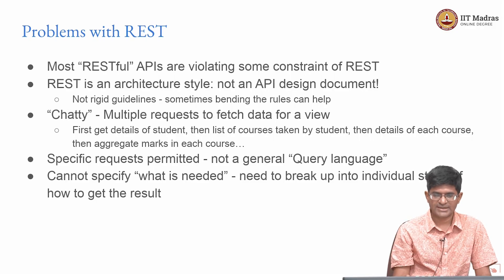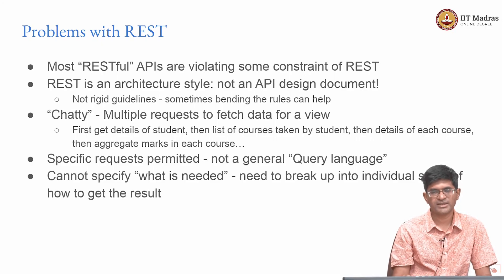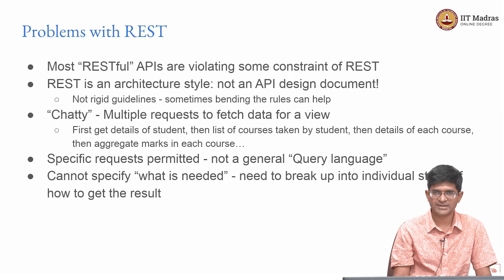One of the problems with REST is that it is sometimes called a chatty protocol — a lot of back-and-forth requests are required to get the data corresponding to a single view. For example, if you want the top students in a course, you get student details, then the list of courses taken by the student, then details of each course, then aggregate marks — potentially many requests back to the server to collect all the information you need if there is no single API function that provides it all.